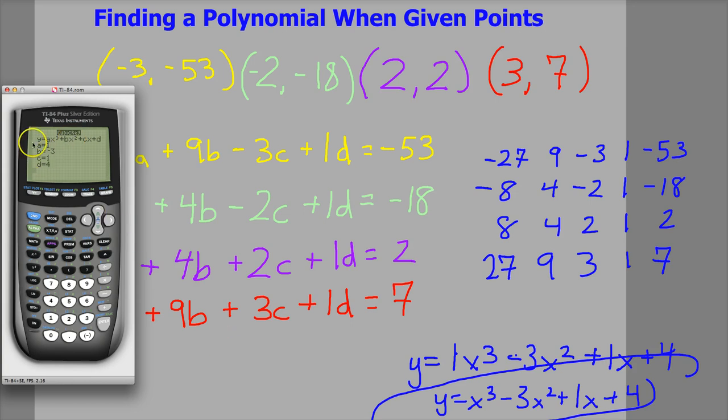So I hit enter, and it will give me this result. Also, as an added bonus, it tells me what the A, B, C, and D are. So 1, negative 3, 1, and 4. So if you do that, you can check to make sure you have the correct answer. And that's all that you need to do.